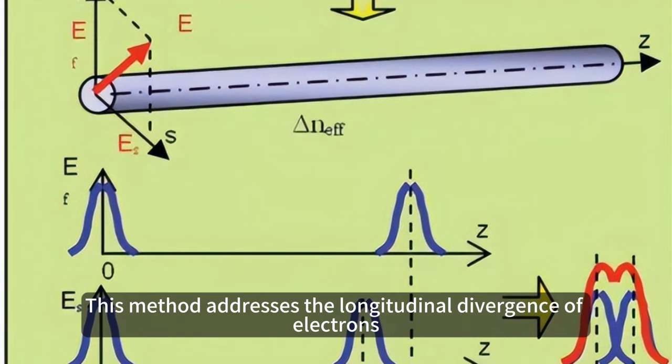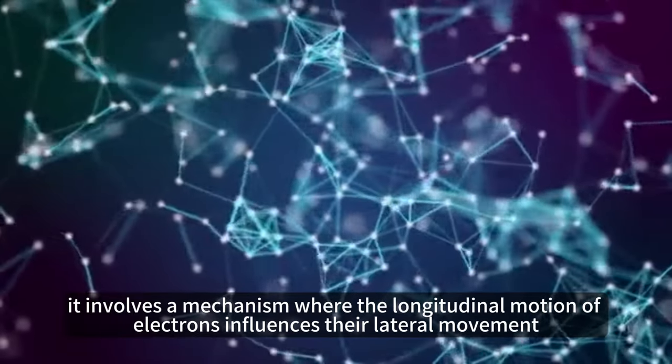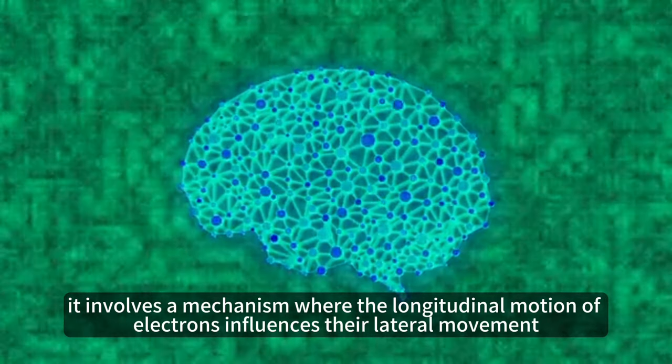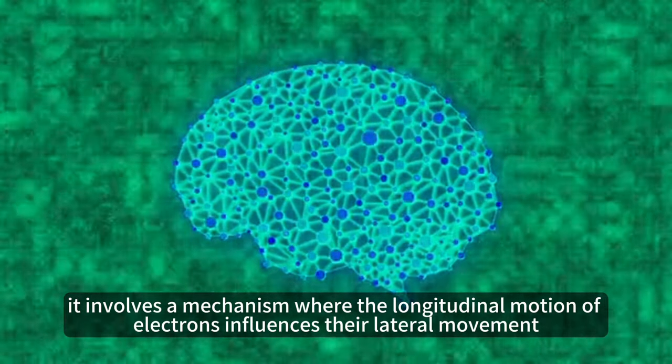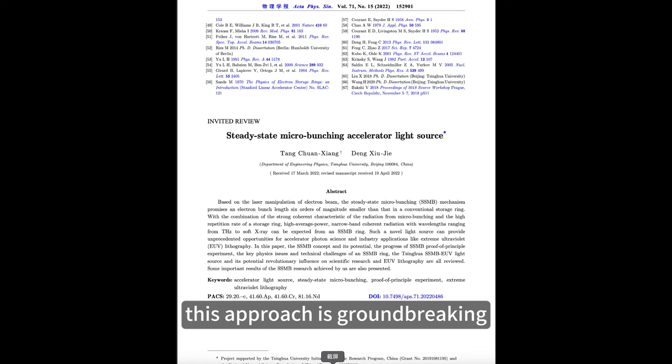This method addresses the longitudinal divergence of electrons. As for the transverse divergence, it involves a mechanism where the longitudinal motion of electrons influences their lateral movement, ultimately constraining the electron bunch to a nanometer-scale range.